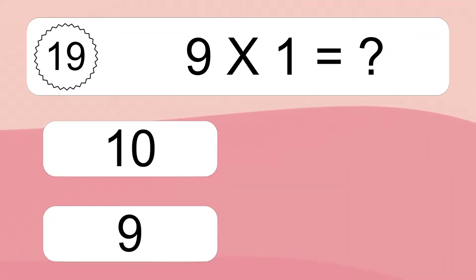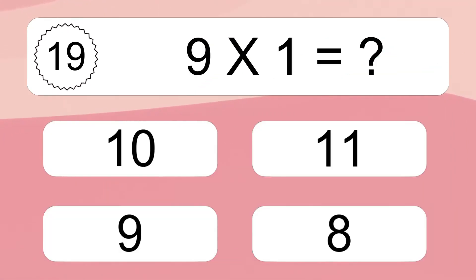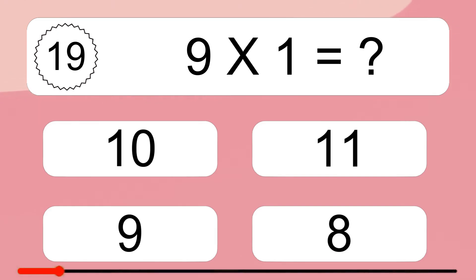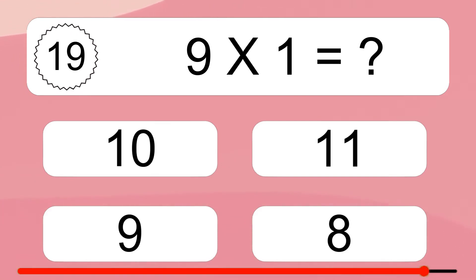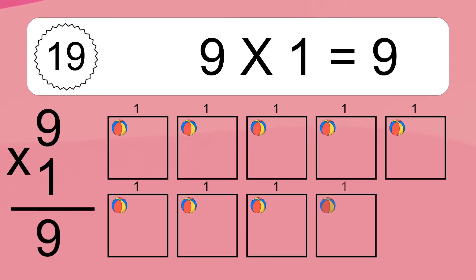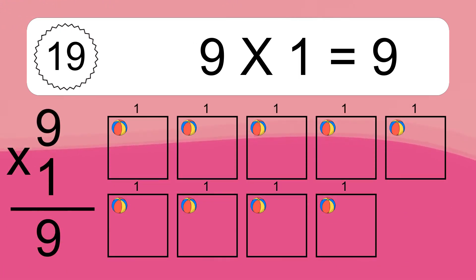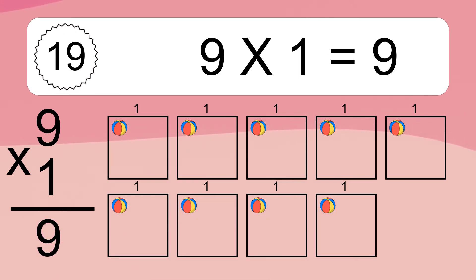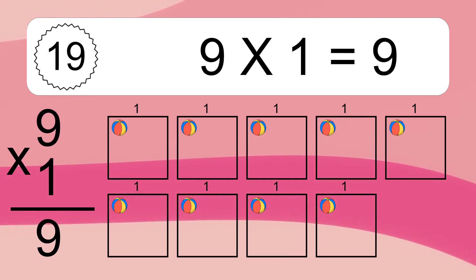9 times 1 equals what? 9 times 1 equals 9. We have 9 boxes, and each box has 1 colorful ball inside. If you count all the balls in all the boxes together, you will have 9 times 1 balls. This equals 9 balls.